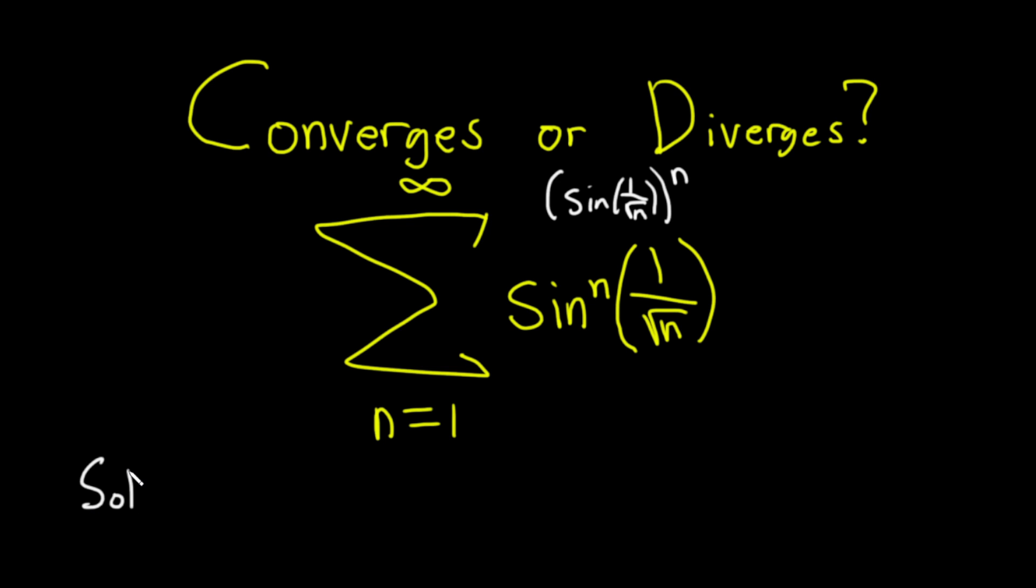We're going to do this using something called the root test. The root test says if you take the limit as n approaches infinity of the nth root of the absolute value of a sub n and it's less than 1, if the answer is less than 1 we have convergence. If it's equal to 1 we don't have any information and if it's greater than 1 we know it diverges.